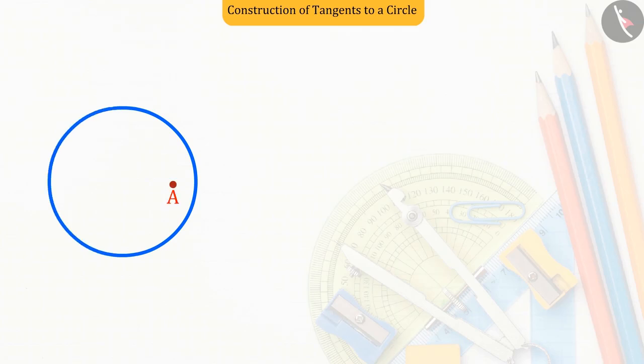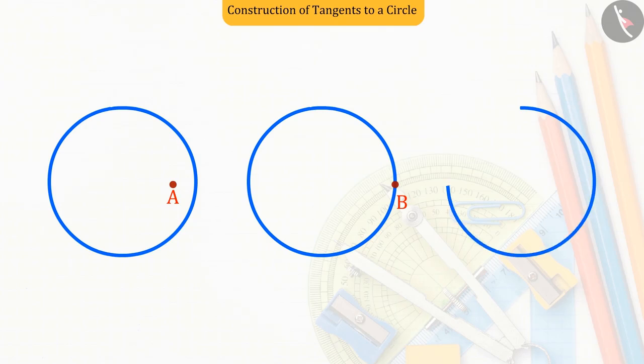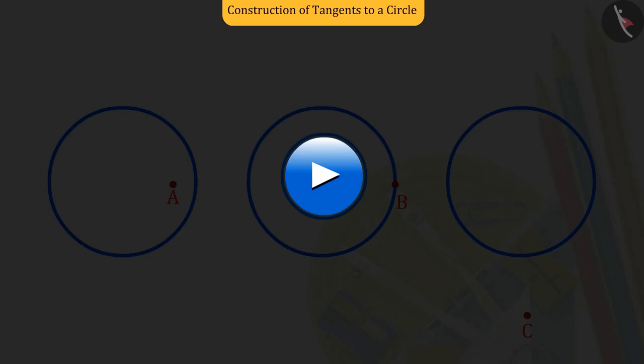Can you tell what will be the number of tangent lines drawn from the point to the circle in each case? To try yourself, pause the video and then match your answer.